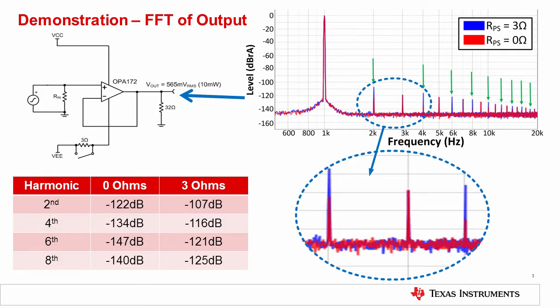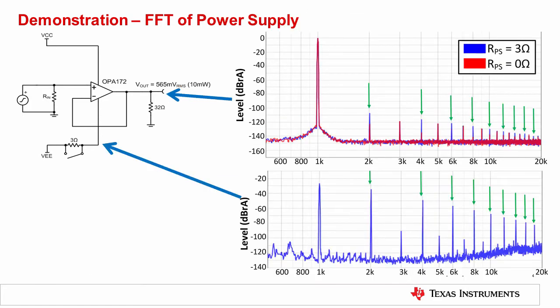The table lists the specific levels for the even harmonics for the 0-ohm and 3-ohm cases. Continuing with the same circuit, this slide shows the FFT of the supply voltage of the device. As we would expect from the Fourier expansion results for the half-rectified sine wave, the supply has a lot of even harmonic content. These harmonics are attenuated by the power supply rejection of the op amp and then appear at the output as shown here.